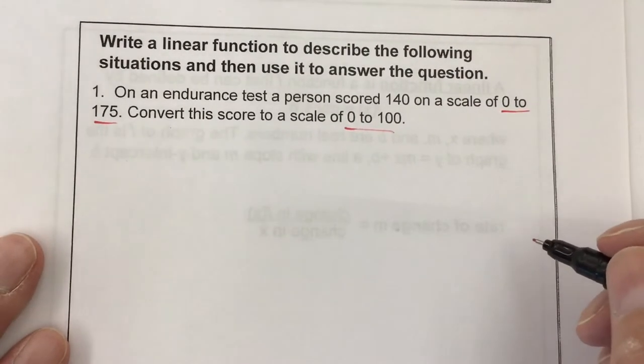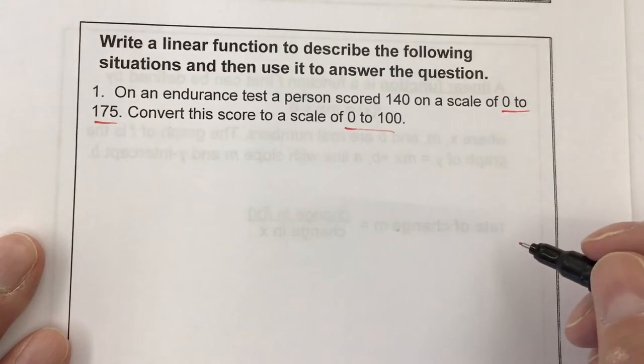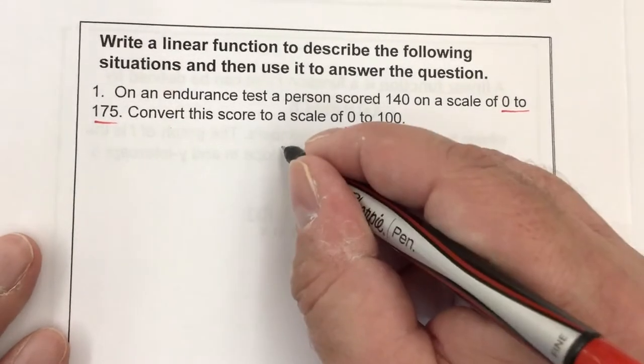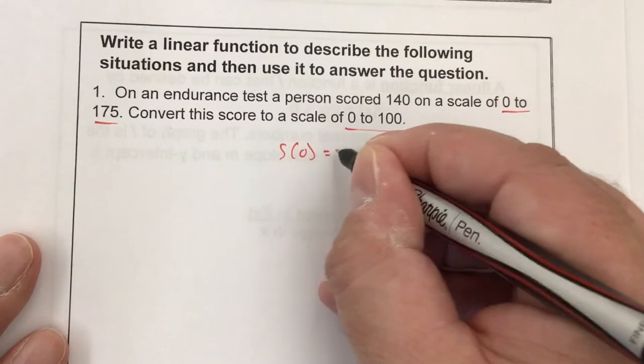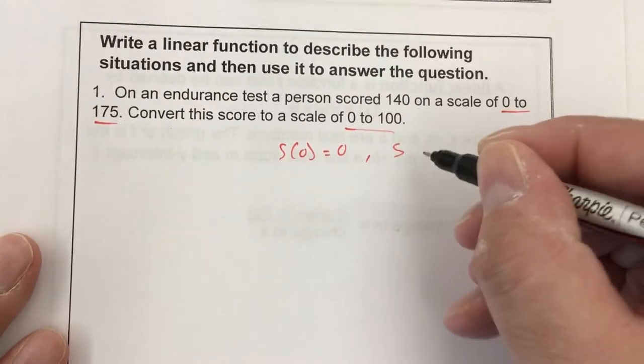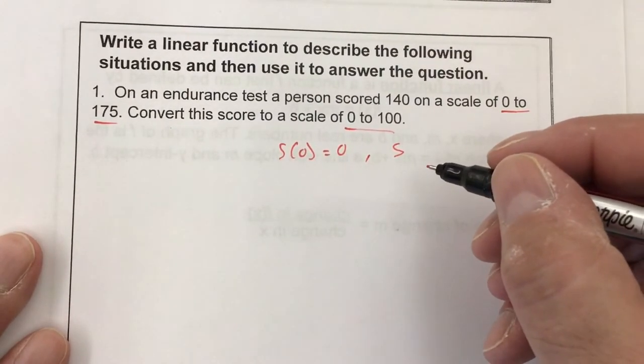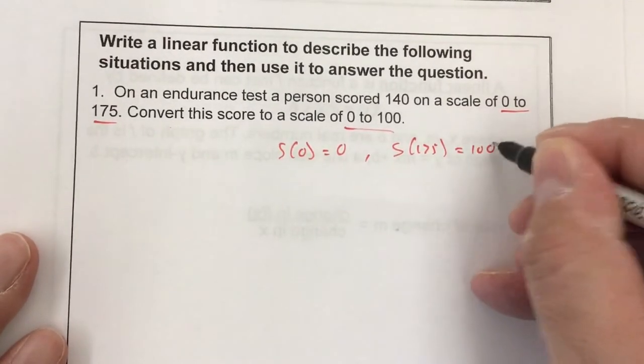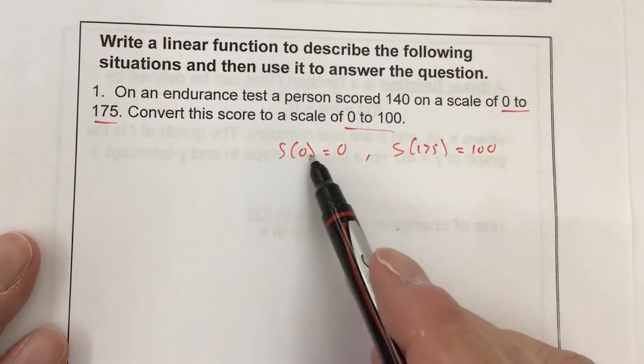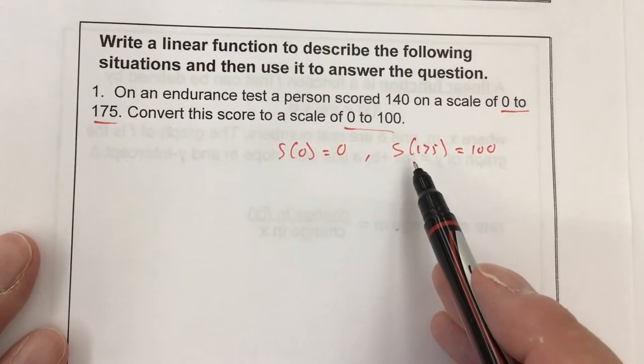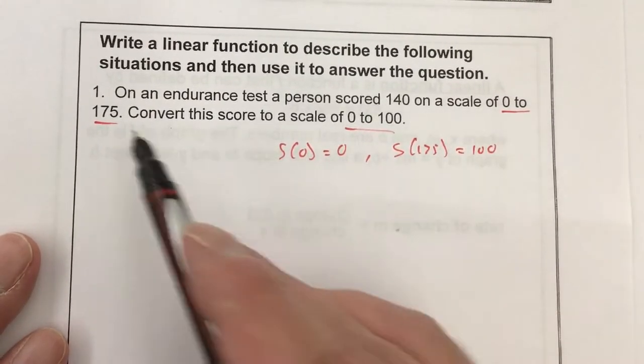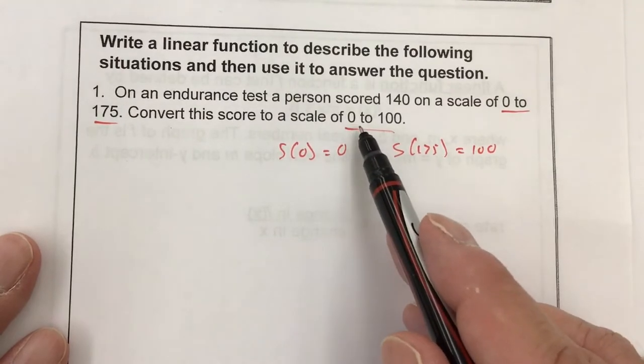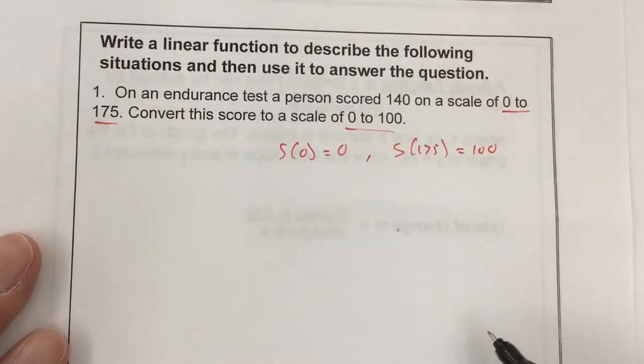I want to make this so s(0), when I plug in my new number, I want it to be 0. When I plug in 175, I want it to change to 100. So I'm taking the old scale to plug in for x, 0 to 175. And the new scale, I want my answers to be now 0 to 100.